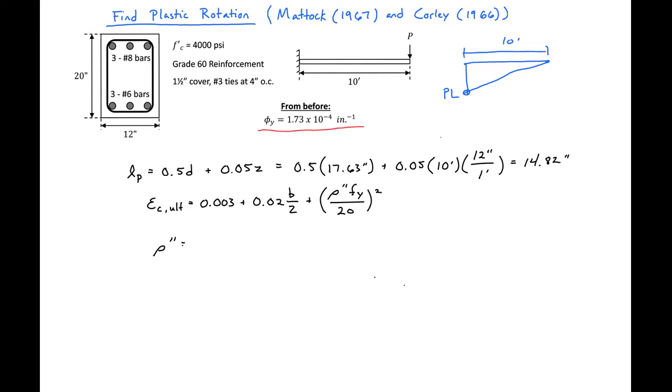Our rho double prime value is just the volume of our stirrups plus the volume of our compression steel all divided by the total volume of the concrete section that we're considering.